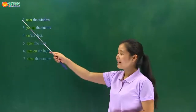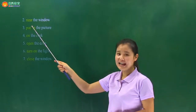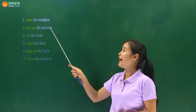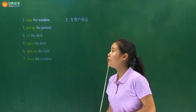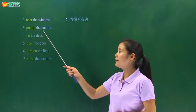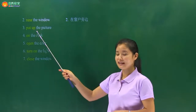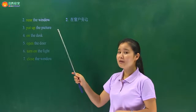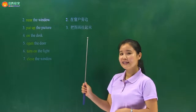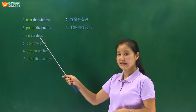Second one，near the window，在窗户旁边。The third one，put up the picture here，put up means 把什么什么挂起来，put up the picture，我们要把图画挂到墙上去。Next one，on the desk，on means 在什么什么上面，on the desk，在桌子上面。